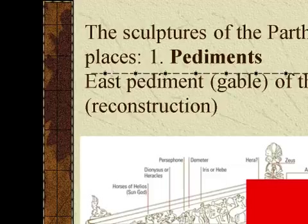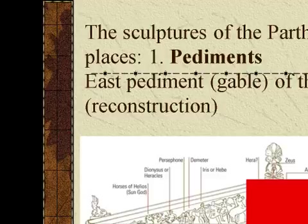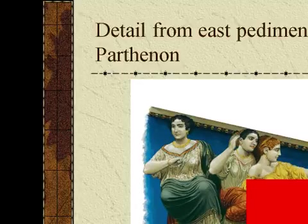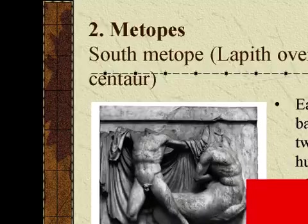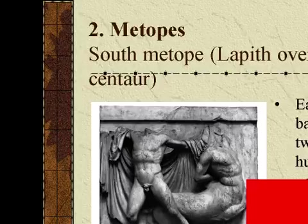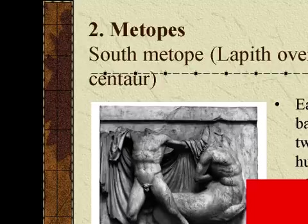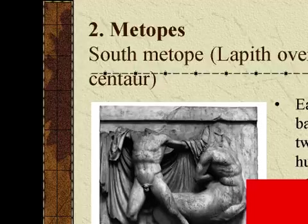The sculpture of the Parthenon appears in three places. One: the Pediment — specifically the East Pediment gable of the Parthenon and a detail from it. Two: the Metopes — each metope shows a battle scene between two contestants, one human and one bestial. The sculptures of the Parthenon's metopes celebrate the victory of intellect over unbridled passion.